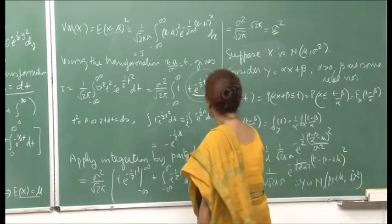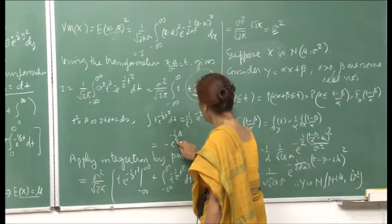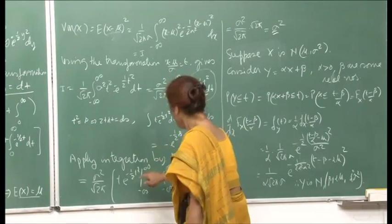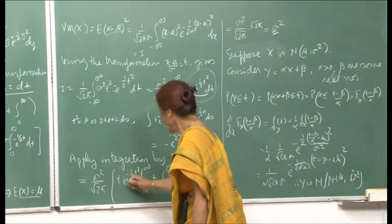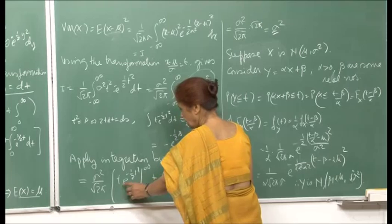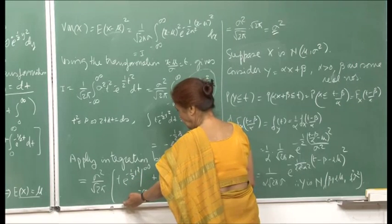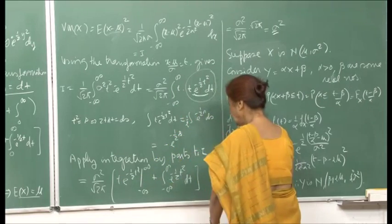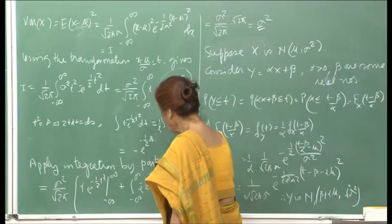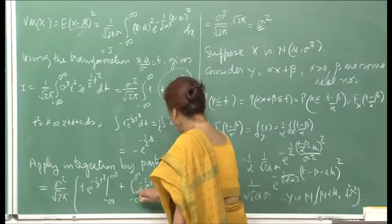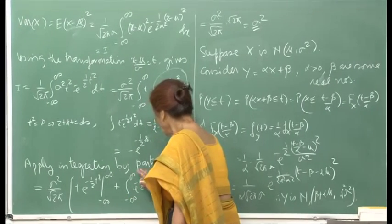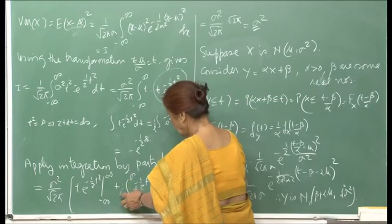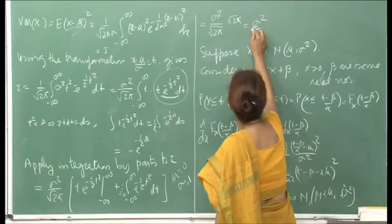Because of the t squared in the denominator, e raised to infinity is much, much larger than t in the numerator, so this will be 0. You will be left with this, which is your normal PDF where μ = 0 and σ = 1. So this integral will be equal to root 2π, because with 1 upon root 2π, this becomes 1. So this integral is equal to root 2π, which cancels, and this is σ². Therefore, the variance of the random variable is σ².